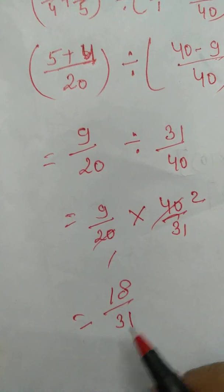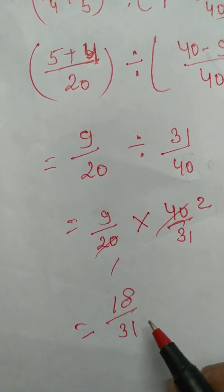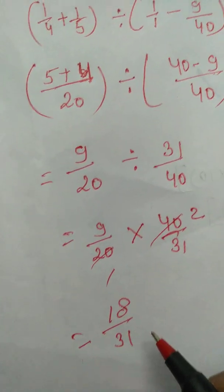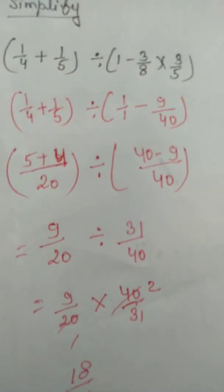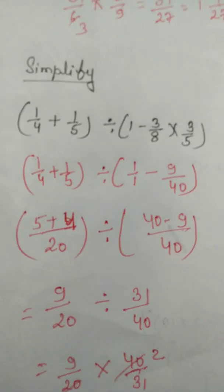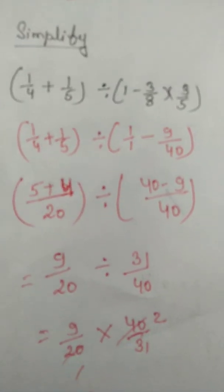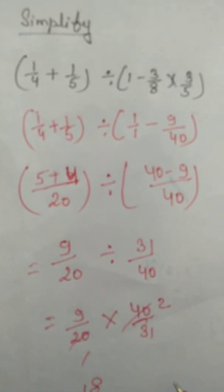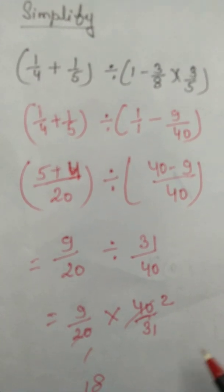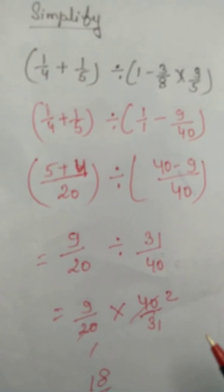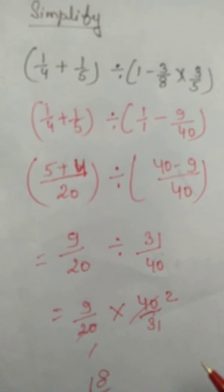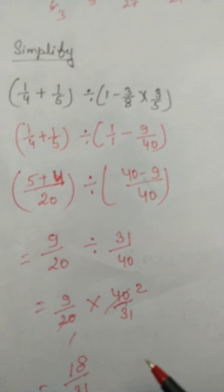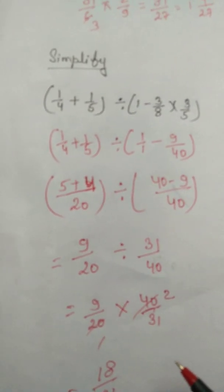Your final answer is 18 upon 31. Since 31 is greater than 18, this is a proper fraction, so it is not converted into a mixed fraction. That completes the simplification and all types of fraction operations — addition, subtraction, multiplication, and division. Thank you.